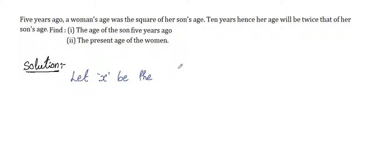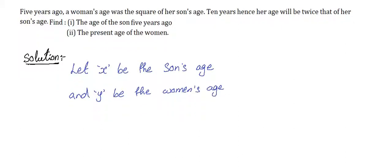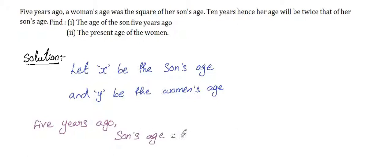Let's assume x is the son's present age and y is the woman's present age. 5 years ago, son's age was x minus 5. Similarly, 5 years ago the woman's age was y minus 5.